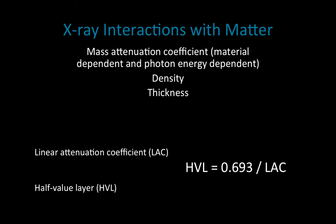So you see all these formulas are connected: the mass attenuation coefficient is related to the linear attenuation coefficient, and the linear attenuation coefficient is related to the half value layer. For a material like lead, which has a high linear attenuation coefficient, photons are going to be highly attenuated when they pass through it. That gives a very big denominator in the LAC, which in turn gives a very small half value layer.